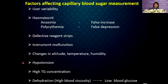Various factors affect capillary blood sugar measurement. User variability can cause different results. Anemia falsely increases and polycythemia falsely decreases glucose measurement. Other factors include defective reagent strips, instrument malfunction, changes in altitude, temperature and humidity, hypotension and high triglyceride concentration. Dehydration greatly increases blood viscosity and lowers blood glucose measurement.